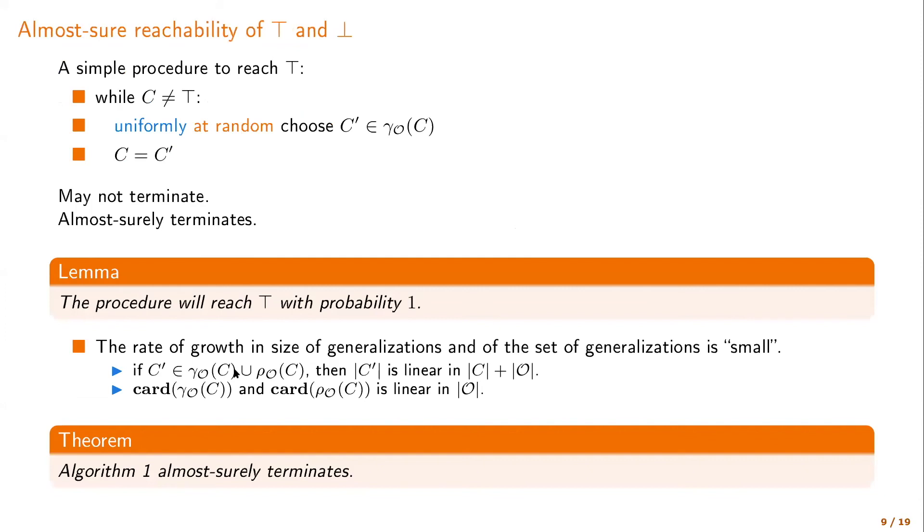However, what we found out is that while this is possible, our general weakening, actual weakening procedure almost surely terminates. Because basically every concept eventually is almost certainly generalized to top or specialized to bottom. And similarly also for the roles, one can show a similar thing.